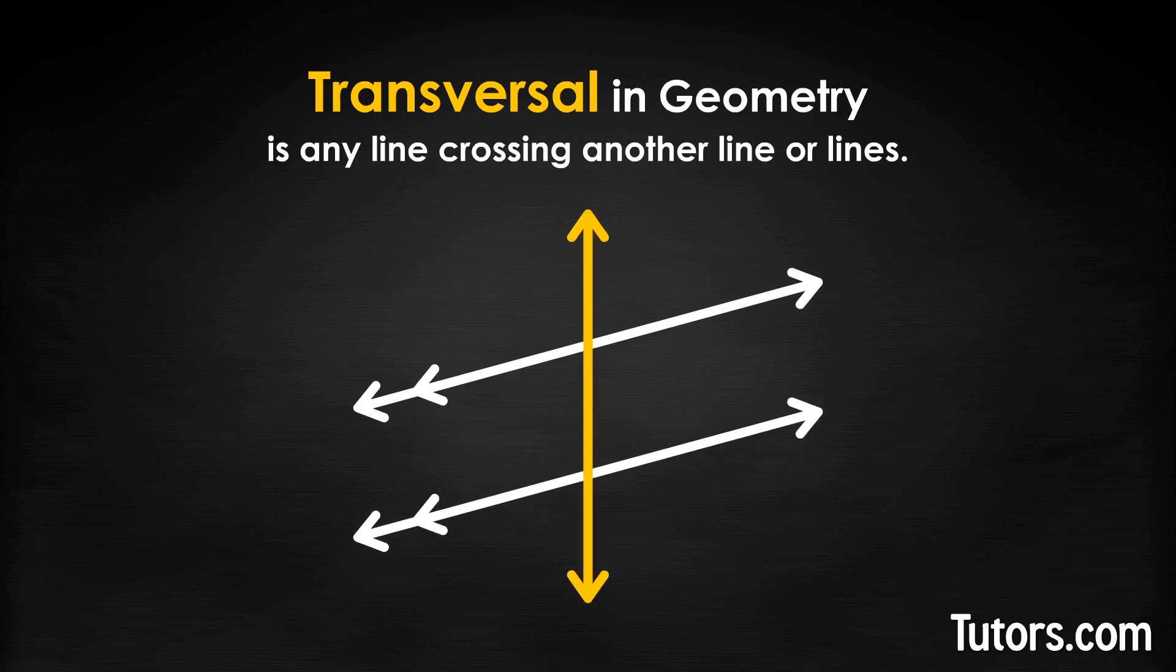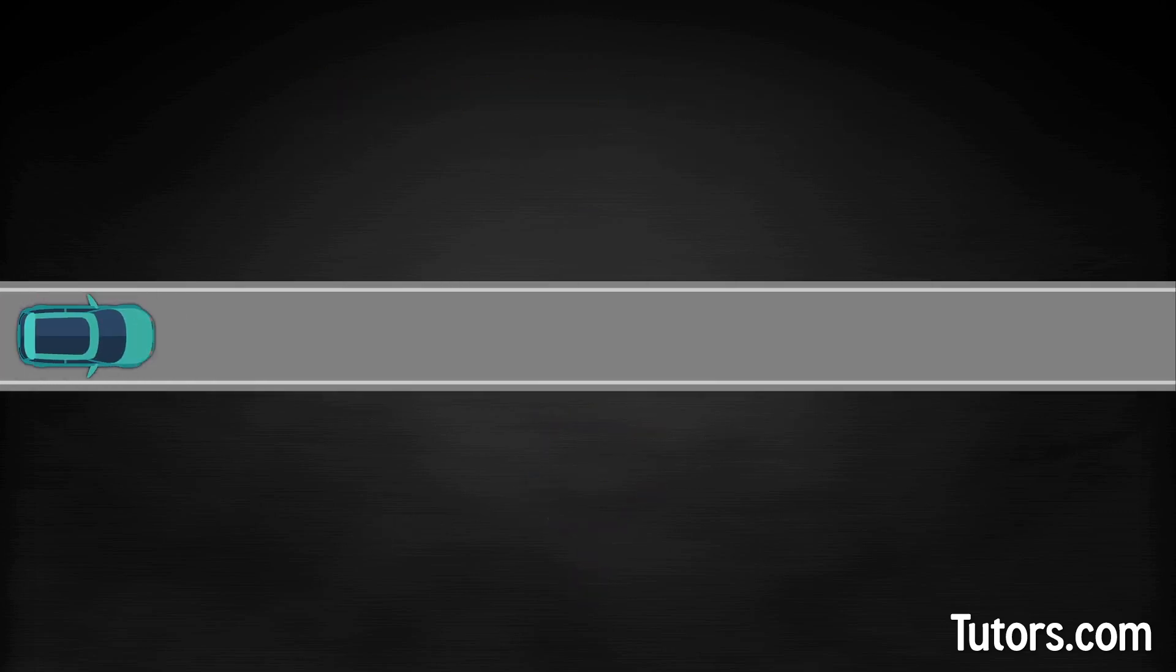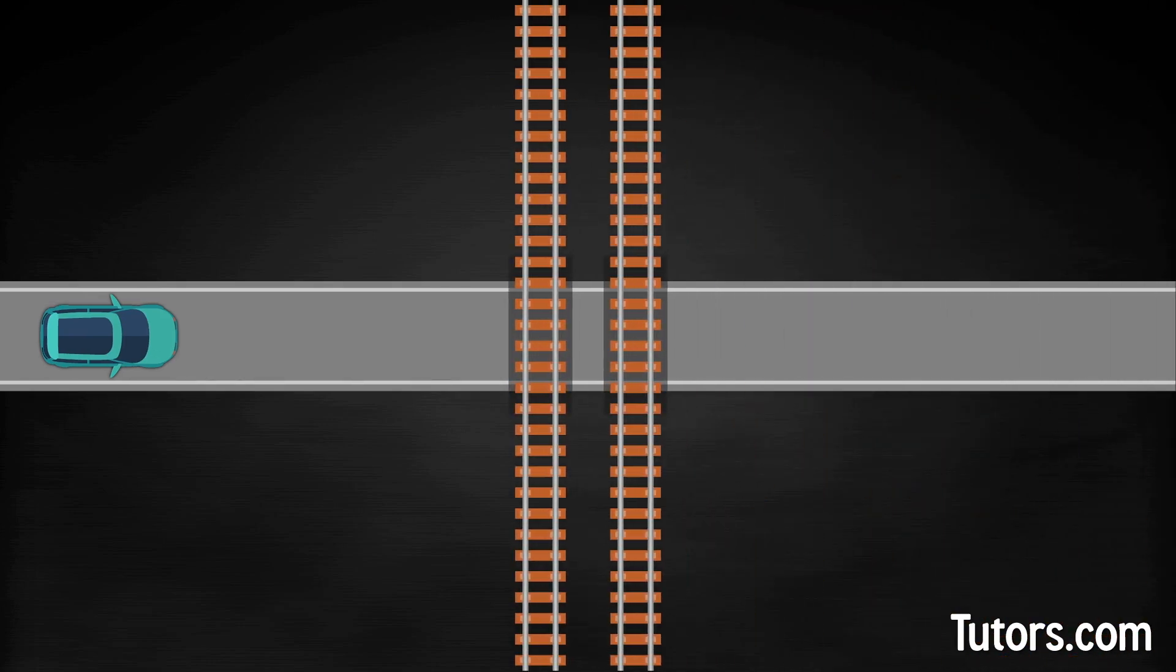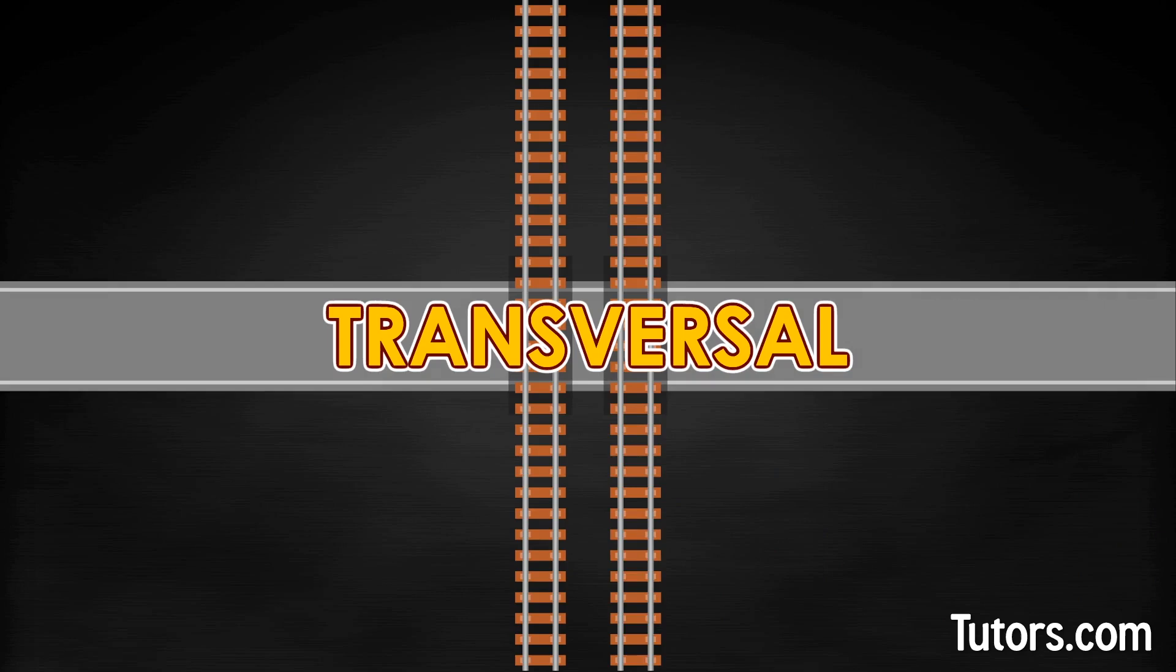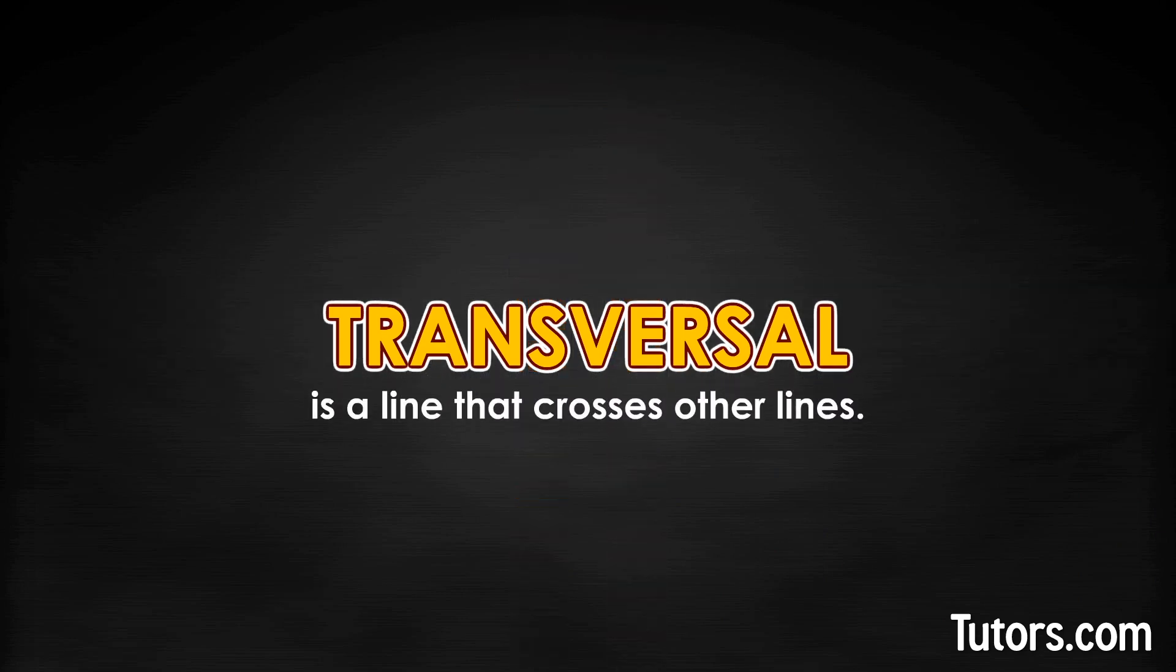When it crosses two parallel lines, the resulting eight angles have interesting properties. You have probably ridden in a car on a street that crossed railroad tracks. As you crossed the tracks, you completed a transversal. A transversal is a line that crosses other lines. Usually we work with transversals when they cross parallel lines, like the two tracks of a railroad.